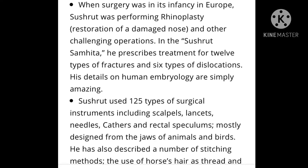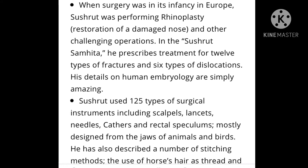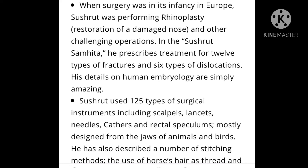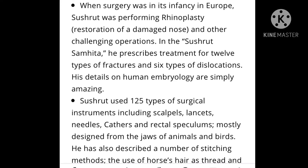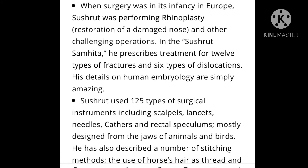In Sushruta Samhita, he prescribed treatment for 12 types of fractures and 6 types of dislocation. His details on human embryology — the study of the human baby — are simply amazing, and he studied those during that age. Sushruta used 125 types of surgical instruments including scalpels, needles, catheters, rectal speculums, mostly designed from the jaws of animals and birds. He has also described a number of stitching methods in his book.